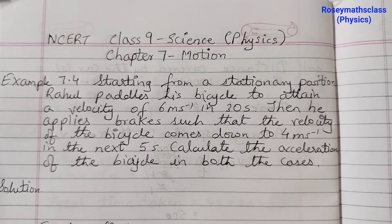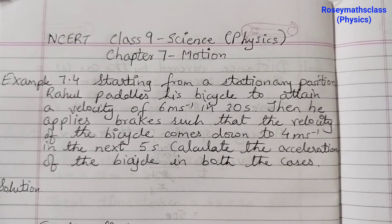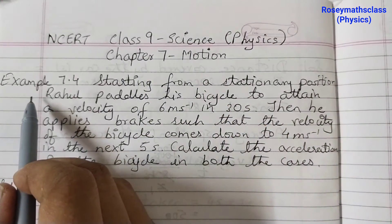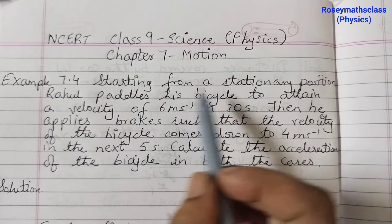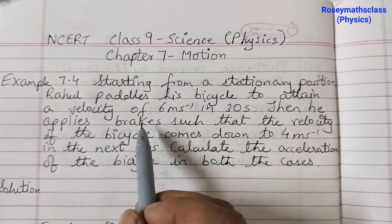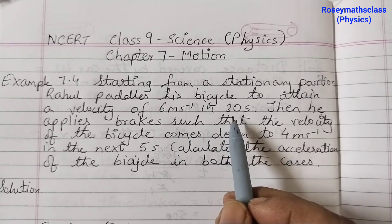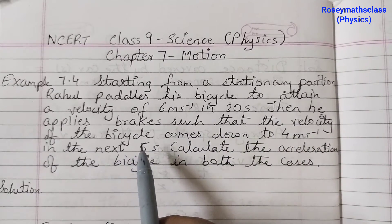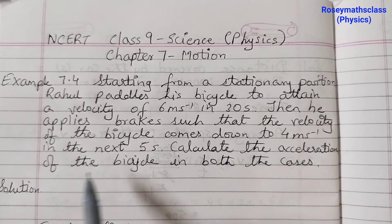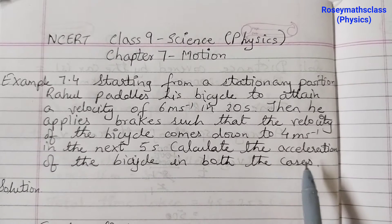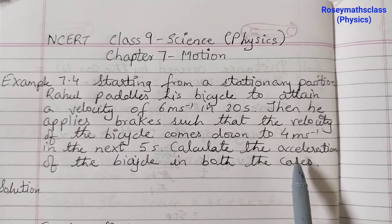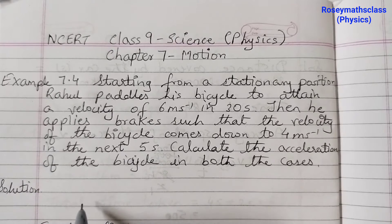Hello students, welcome back to Rosy Maths class. Today we shall discuss a science problem — a numerical problem, class 9th chapter 7: Motion. That's example 7.4. Starting from a stationary position, Rahul paddles his bicycle to attain a velocity of 6 meters per second in 30 seconds. Then he applies brakes such that the velocity of the bicycle comes down to 4 meters per second in the next 5 seconds. Calculate the acceleration of the bicycle in both the cases. So we need to calculate the acceleration.